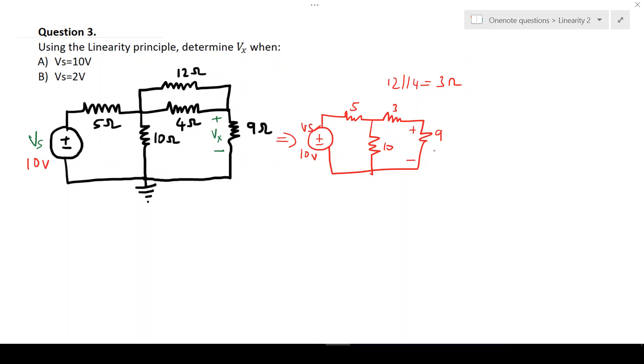So we will now assume a voltage. So I'm going to assume Vx equals to 9 volts. So if I've got 9 volts there, that tells me that my current, I will then equal to 9 over 9, which gives me 1 amp.